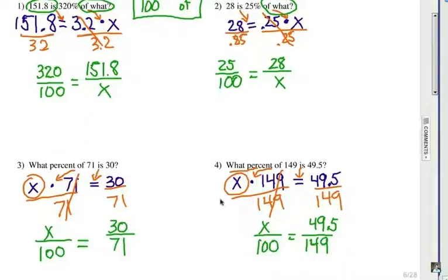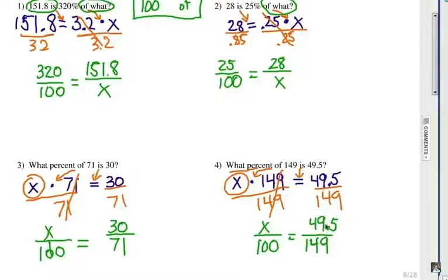For numbers 3 and 4, you have an unknown percent — 'what percent' — so it's x over 100. For number 3, 71 is 'of', so that goes on the bottom: 30 out of 71. Number 4: 'what percent' again — unknown — so x over 100. 'Of 149', so 149 goes on the bottom. 'Is 49.5', so 49.5 goes on the top. You would cross multiply and end up with an equation similar to the equation method, and solve to get the very same answer.